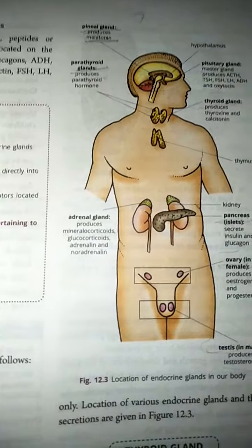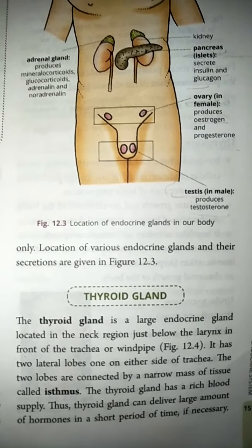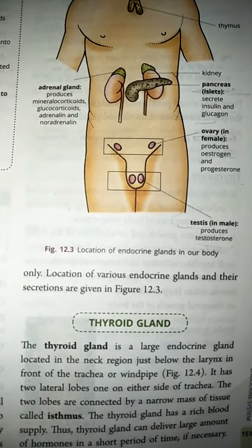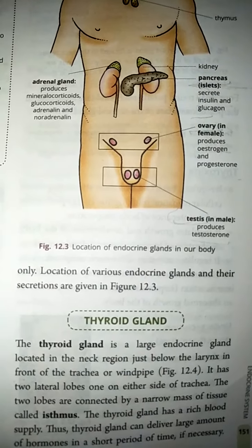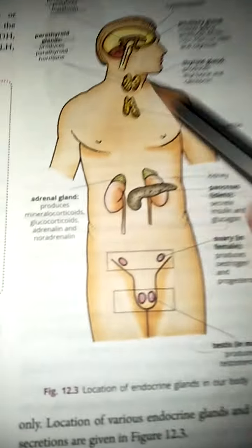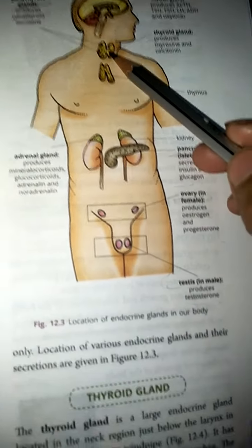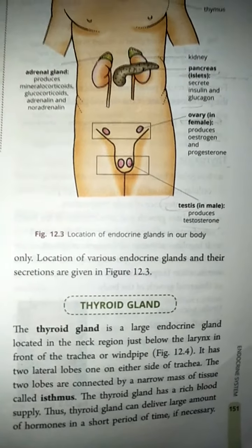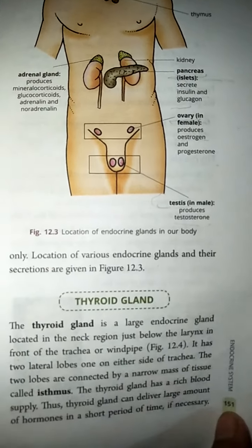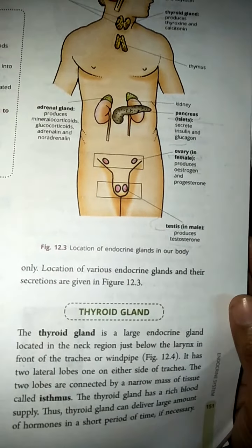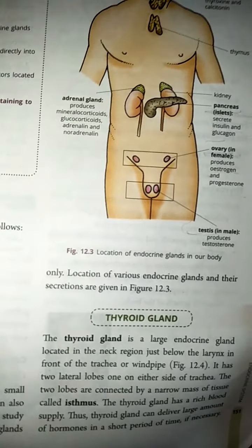Now let's discuss the thyroid gland in detail. The thyroid gland is the largest endocrine gland in our body. It is present in the neck region, just below the voice box, above the windpipe. In the neck region we have two pipes: the esophagus and the windpipe. The thyroid gland sits in front with two lobes on both sides, connected by tissue. The thyroid gland has a rich blood supply.